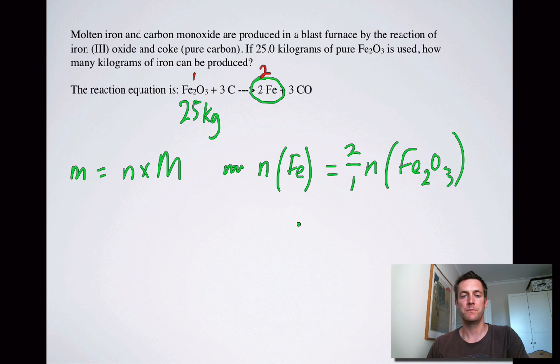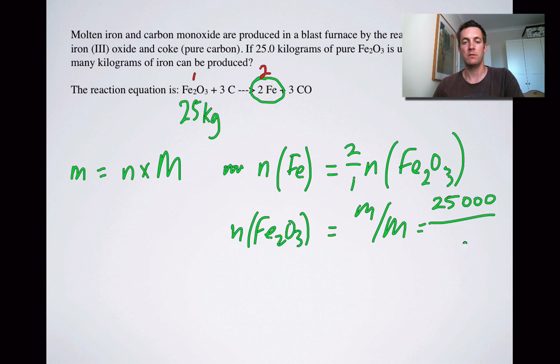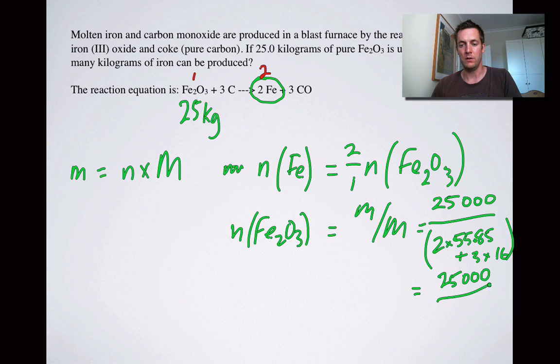So let's find the number of moles of Fe2O3. Well, that equals the mass over the molar mass, which is 25,000 because we've got 25,000 grams divided by 2 times 55.85 added to 3 times 16. So we'll find the bottom first. So that's 2 times 55.85 plus 48. That's 25,000 over 159.7. 25,000 divided by that. So equals 156.5 moles. So we now know the number of moles of Fe2O3.